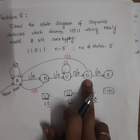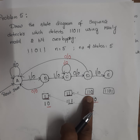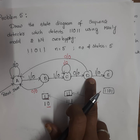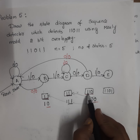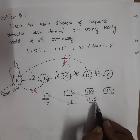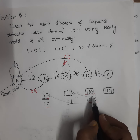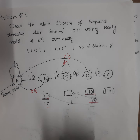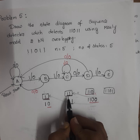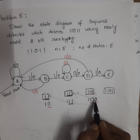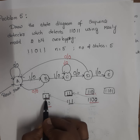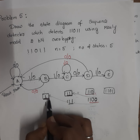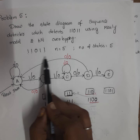For state D, bits detected are 1, 1, 0. When input is 1, it goes to the next state. For input 0, compare 3 bits — 1, 0, 0 vs 1, 1, 0 — no match. Compare with previous state using 2 bits — 0, 0 vs 1, 1 — no match. Compare with previous state using 1 bit — 0 vs 1 — no match. If there is no match, go to reset state.